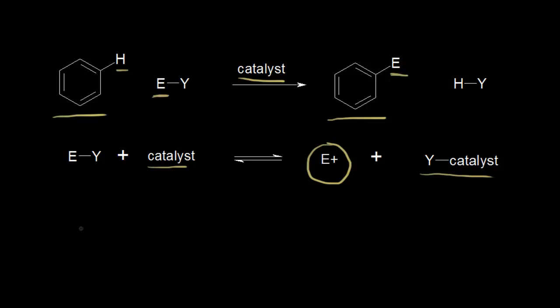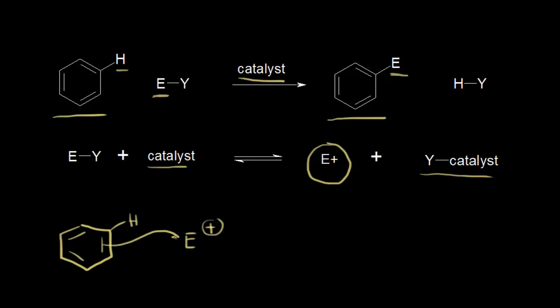Now that we've formed our electrophile, let's look in more detail at what happens in electrophilic aromatic substitution. We start with our benzene ring, showing one of the hydrogens — it could be any of the six since they are all equivalent. The pi electrons in the benzene ring are attracted to the positively charged electrophile, because negative charges are attracted to positive charges. So the pi electrons function as a nucleophile and attack the electrophile.